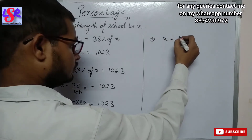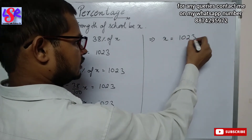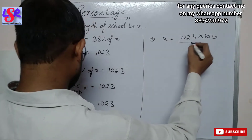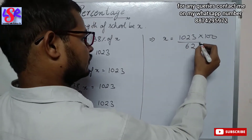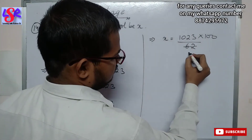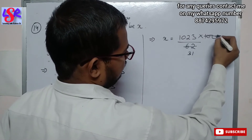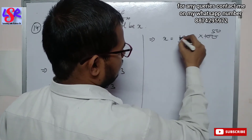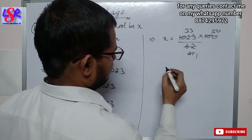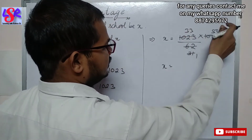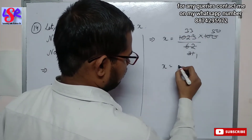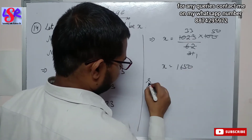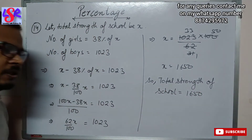Transposing: x equals 1023 into 100 upon 62. We can cancel 62 by 2, this becomes 31, and 100 divided by 2 gives 50. Solving further, total strength of the school is 1650.